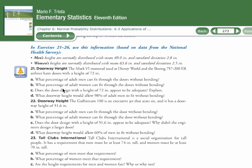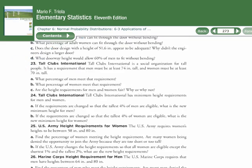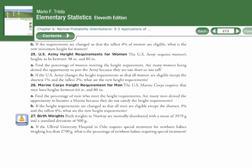So in Part A, we're asked to answer the following. So it's about the U.S. Army height requirements for women. The U.S. Army requires women's heights to be between 58 and 80 inches. Find the percentage of women meeting the height requirement.